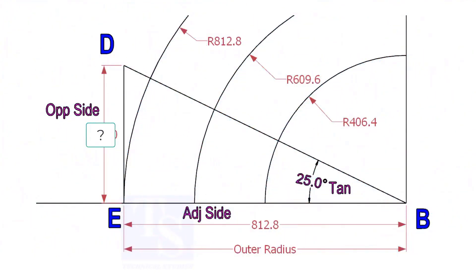Mark a line 25-degree rotated from the baseline AB. To draw the line DB, we need to know the length of the line ED. To calculate ED, we need to apply the formula: tan-theta equals opposite side divided by adjacent side.